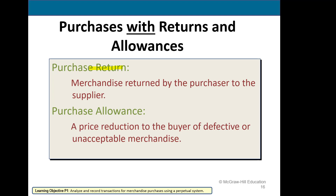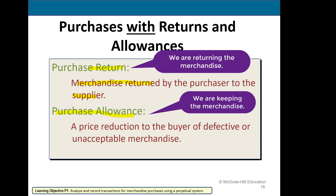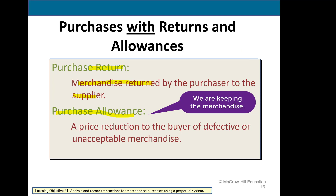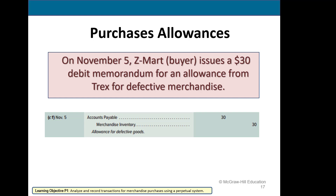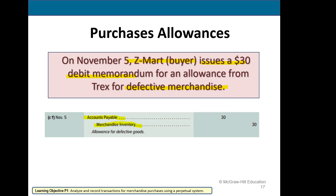A return means we are physically returning the merchandise to the supplier. An allowance means we're keeping it but will get a price reduction. In this example, Z-Mart the buyer issues a $30 debit memo for an allowance for defective merchandise. The supplier is giving Z-Mart a $30 discount because of the defective merchandise, so we reduce accounts payable and also reduce the merchandise inventory account.